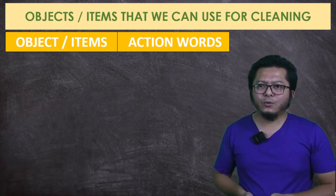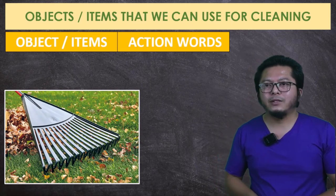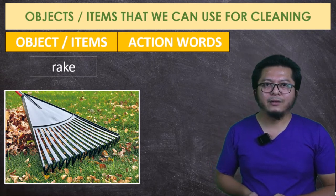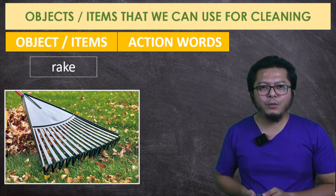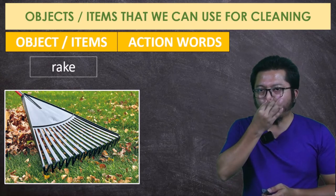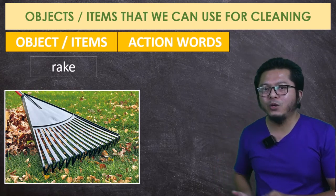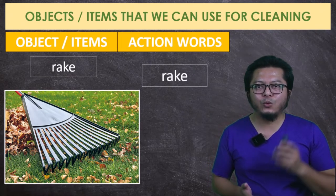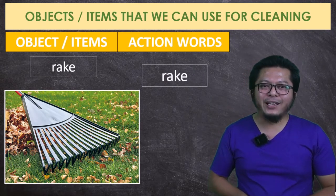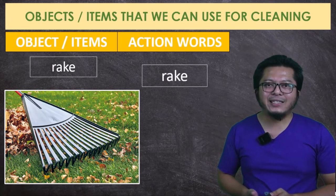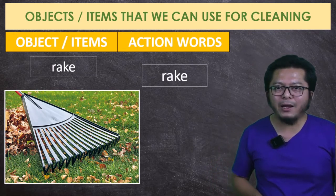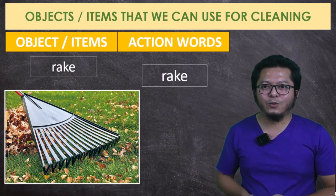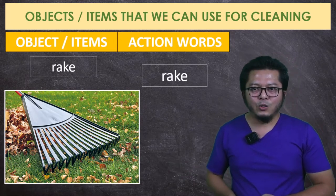The next object is called a rake. In Malay, a rake is called pencakar. The action word when we use this object is also rake — the same word as the object, same spelling. So it means to rake something — mencakar sesuatu in Malay. Like in this picture, you rake something.